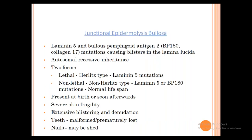Junctional Epidermolysis Bullosa is at the junction of the epidermis and dermis. Two types of antigens are involved: Laminin 5 or BP Antigen 2. BP Antigen 2 (BP180, collagen 17) mutations can cause blistering in the lamina lucida. It is an autosomal recessive disease. The lethal Herlitz type has Laminin 5 mutations — the child does not survive long. The non-lethal non-Herlitz type may have Laminin 5 or BP Antigen 180 mutations, and the child has a normal lifespan.